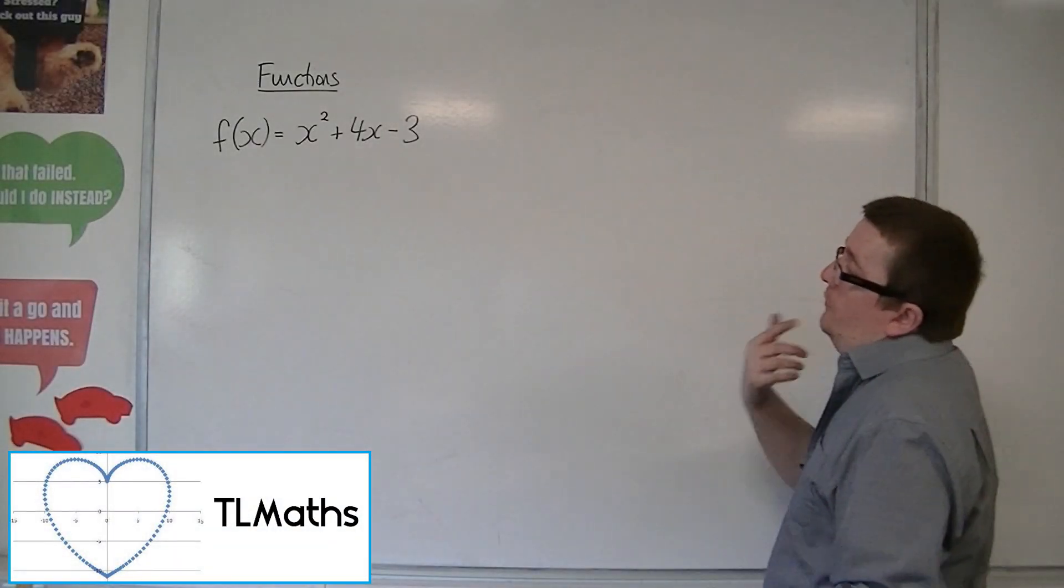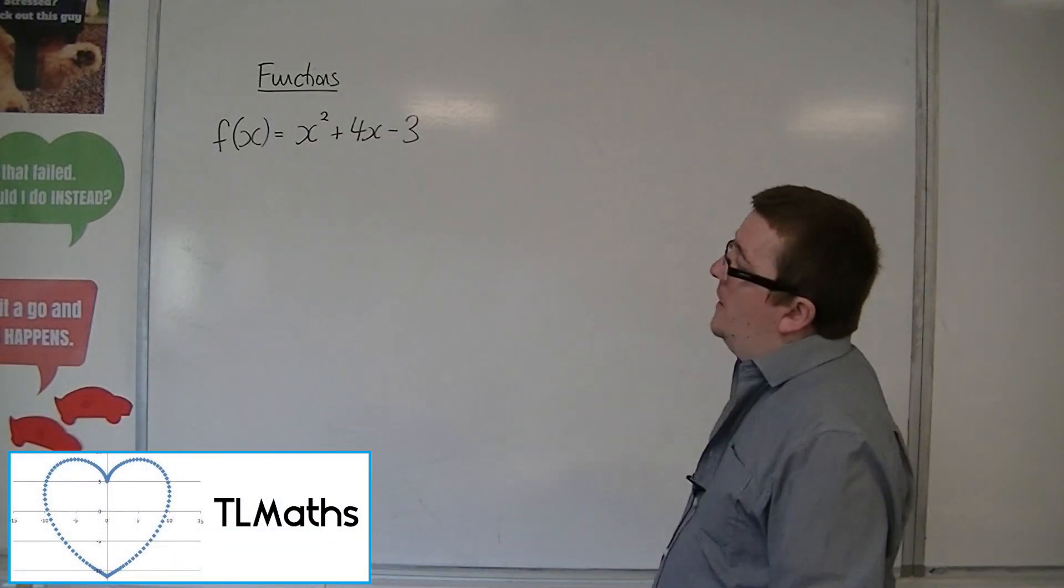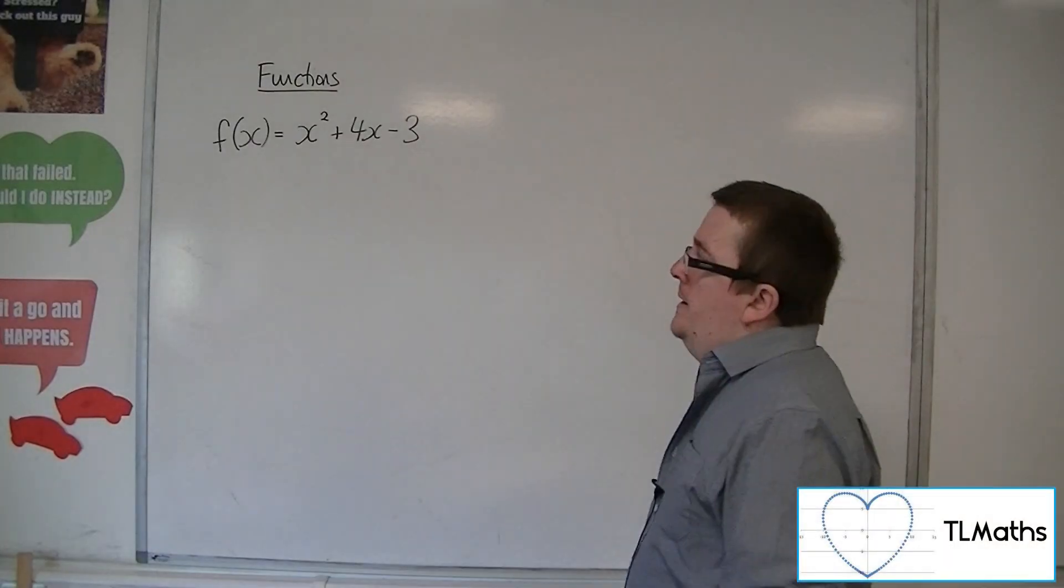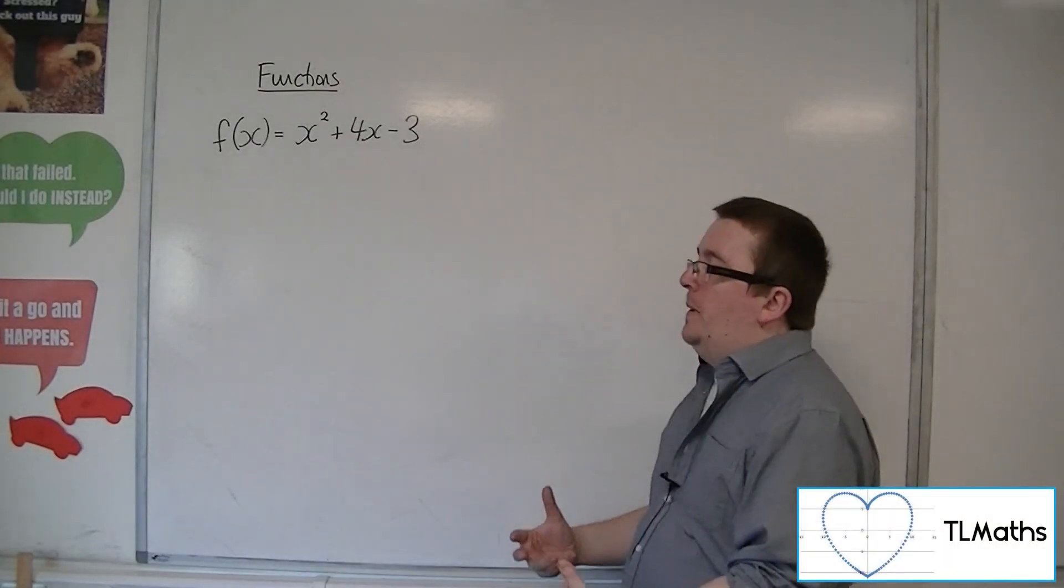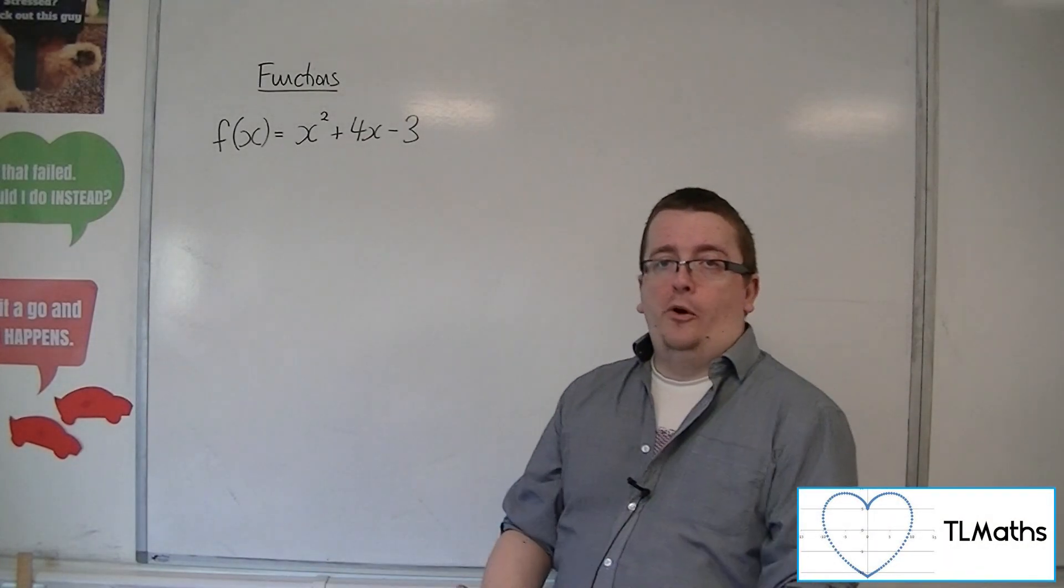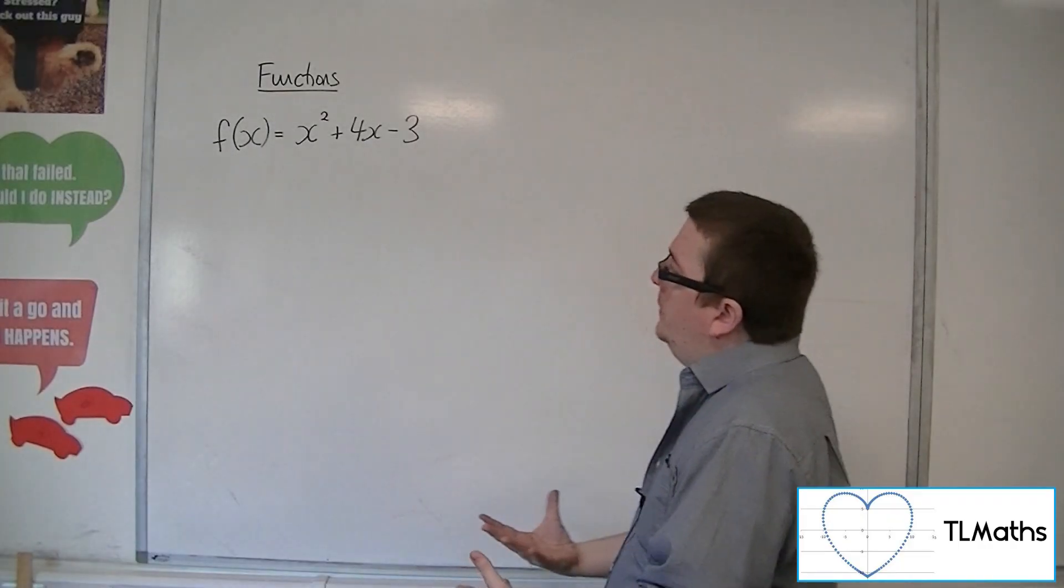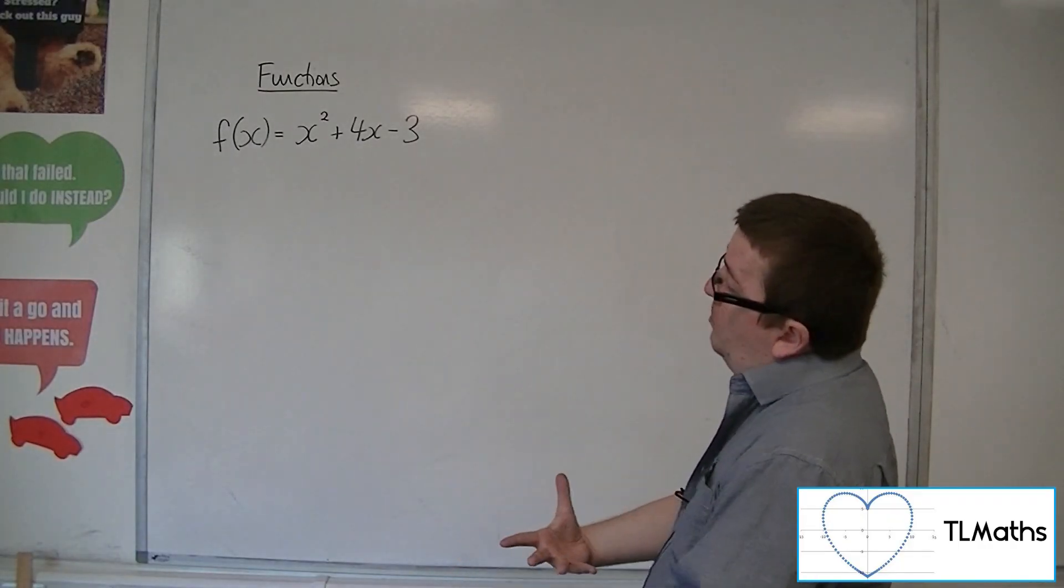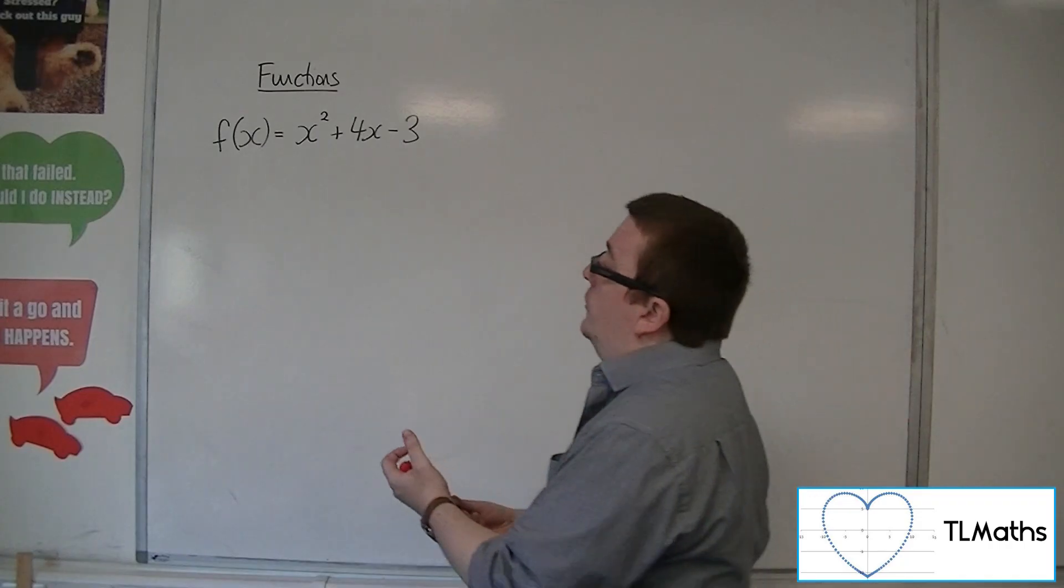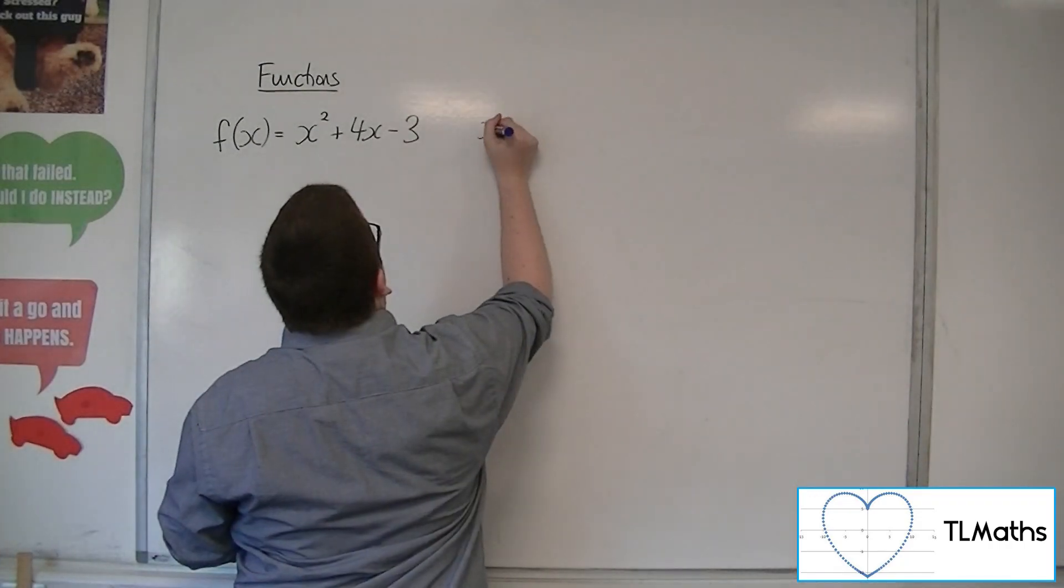Here is a function: f(x) = x² + 4x - 3. Now, ordinarily, if I was being asked what is its greatest possible domain, then there are no problem values of x, so x could be any real value.